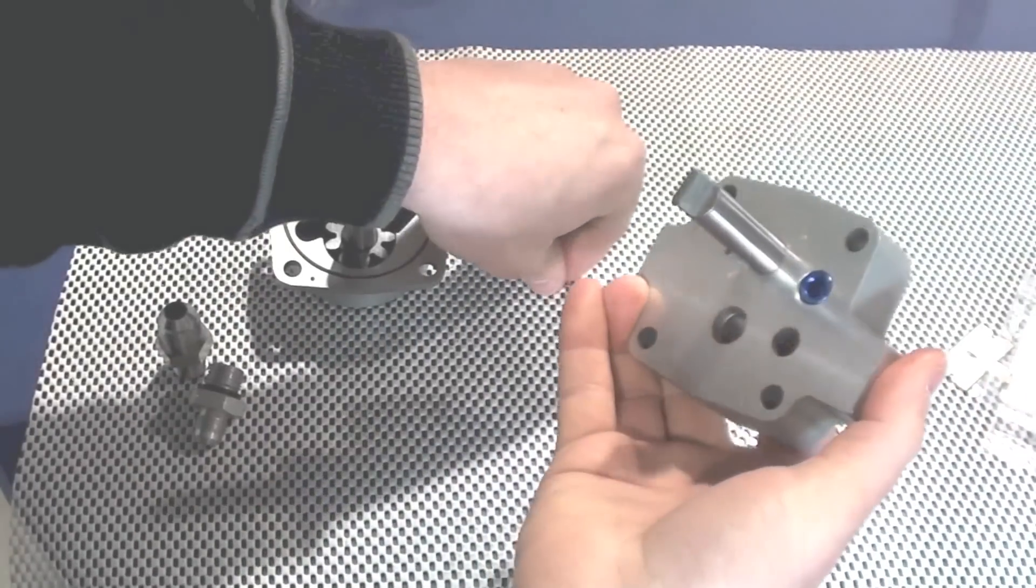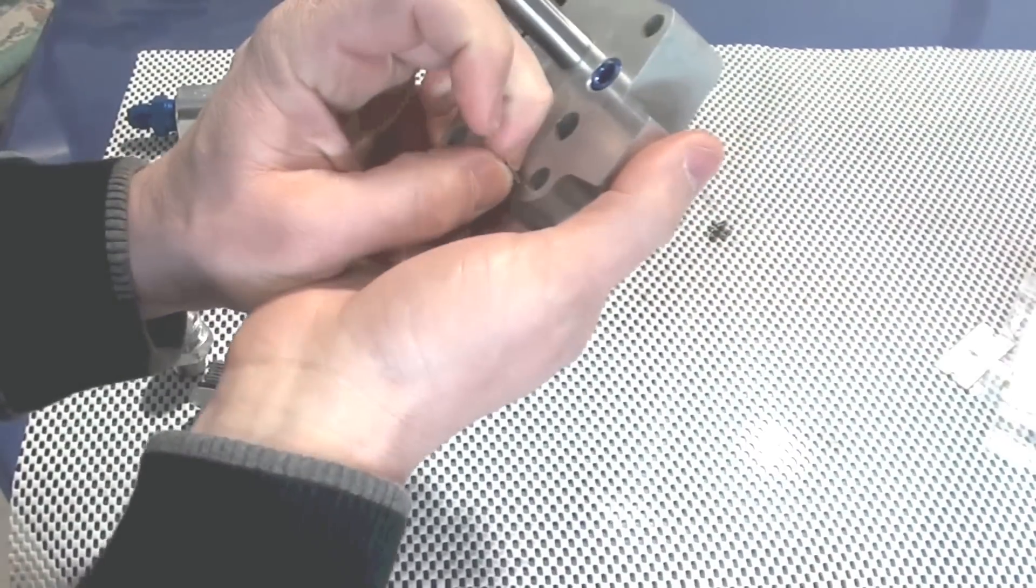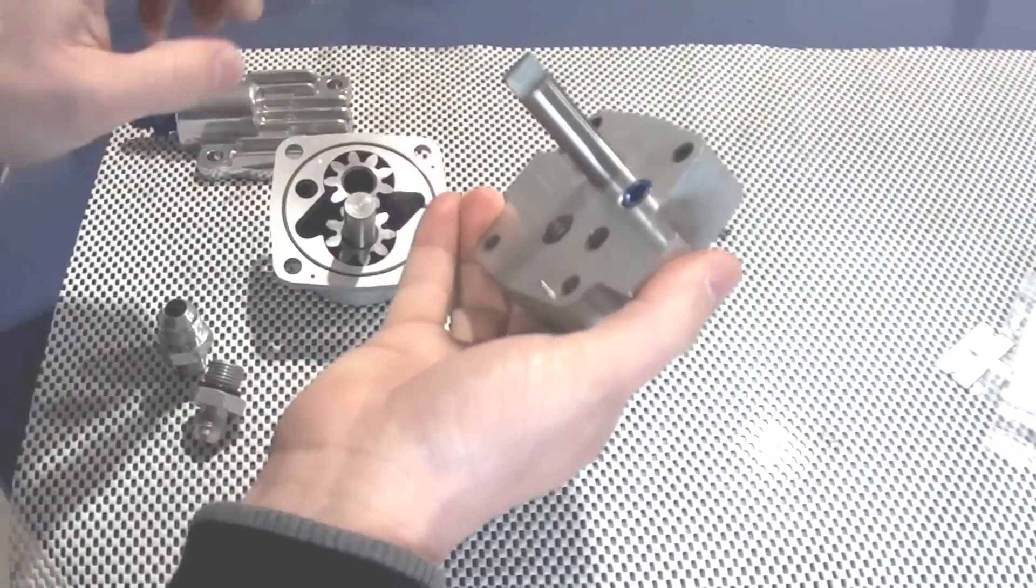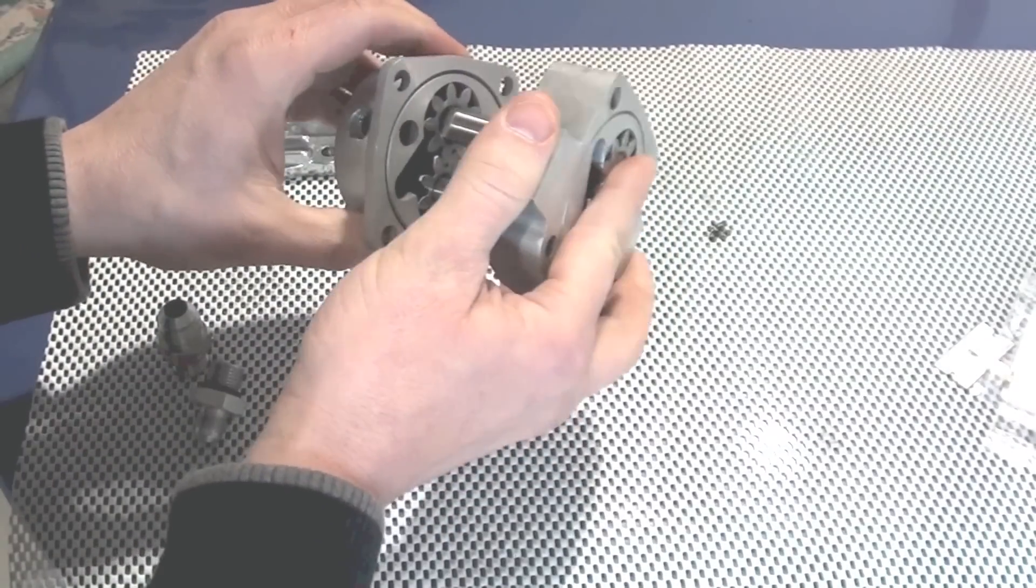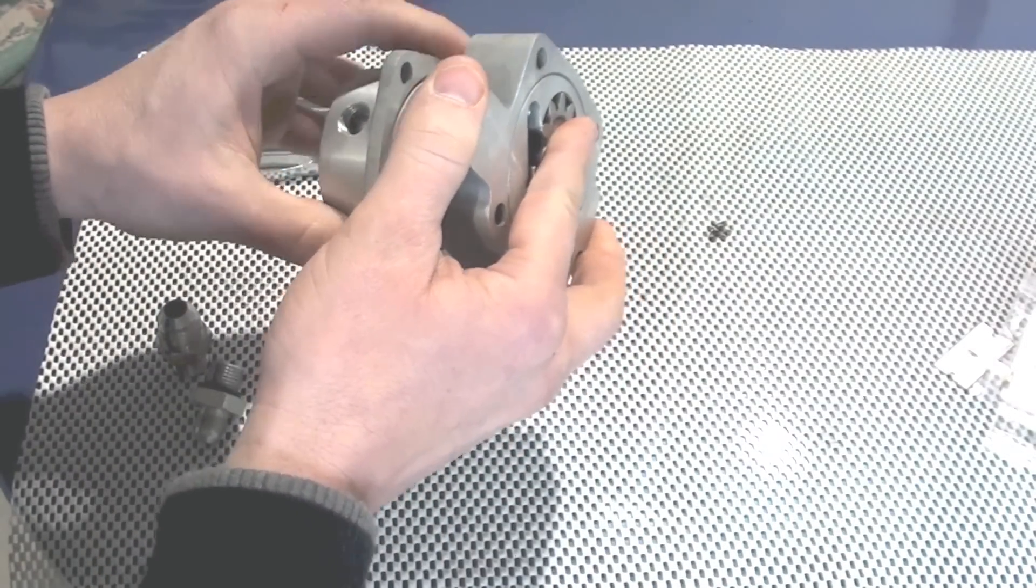These little pins, there's two alignment pins on the back of the pump you need to look out for. Make sure they're in place. This is a trial assembly by the way. Otherwise the gaskets would be in there.